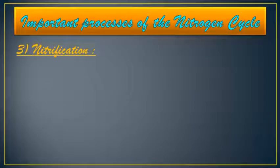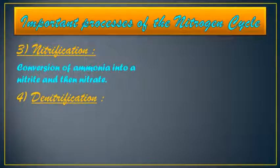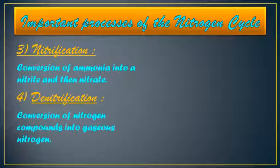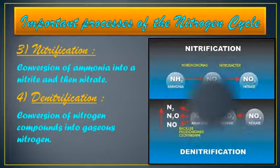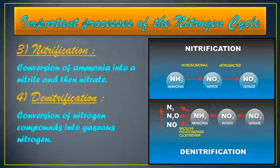The third process is nitrification, which is the conversion of ammonia into nitrite and then into nitrate. In the diagram, you can observe that Nitrosomonas bacteria convert ammonia into nitrite (NO2), and then Nitrobacter bacteria convert this nitrite into nitrate (NO3).